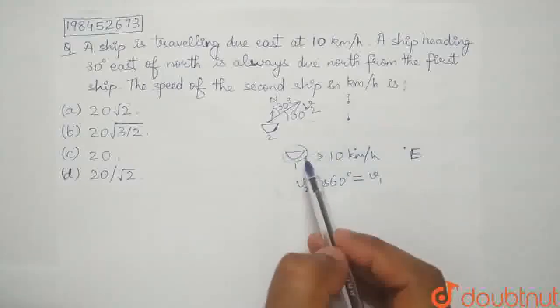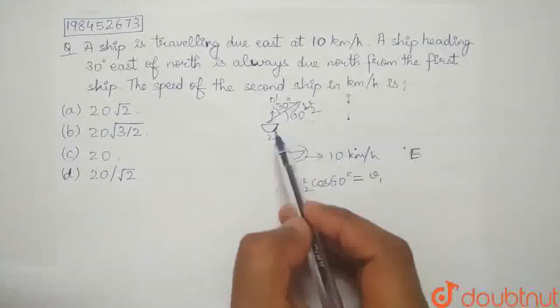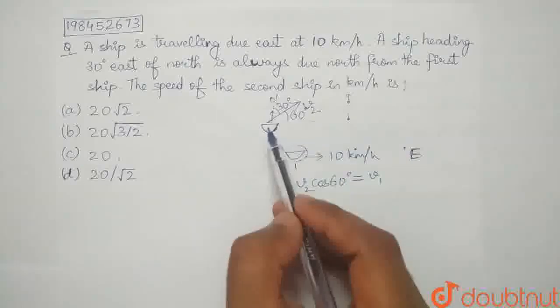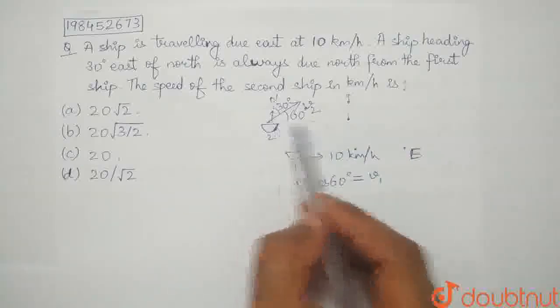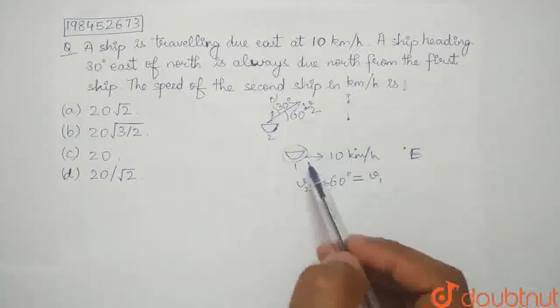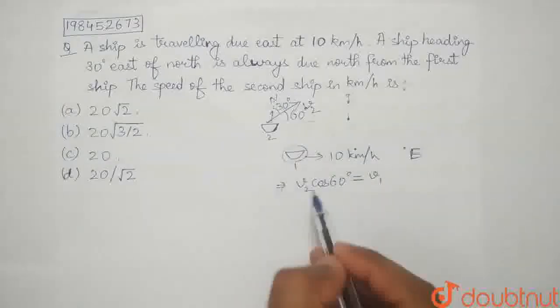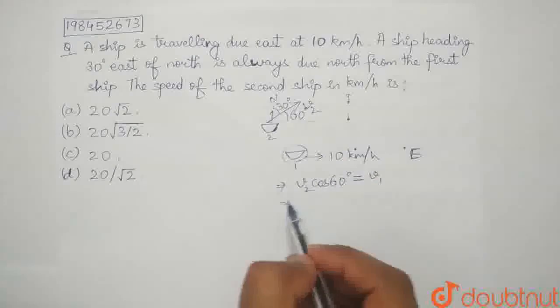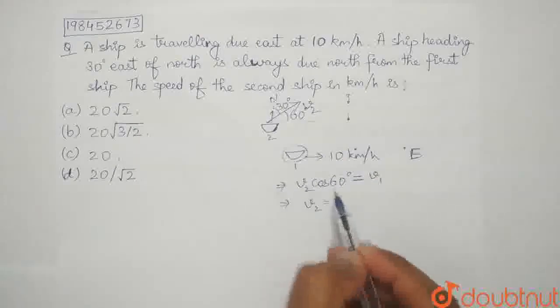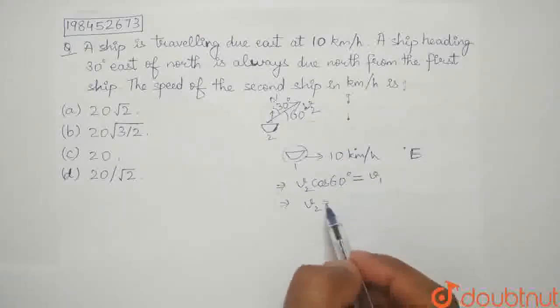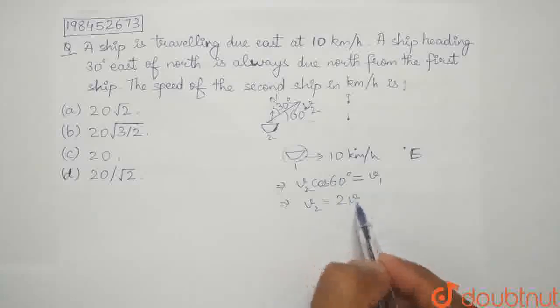The distance ship 1 is moving in the eastern direction must equal the distance ship 2 is moving in the eastern direction. This implies that v2 cos 60 degrees will be equal to v1. So, v2 will be equal to what? Cos 60 is half. So, v2 is twice v1.